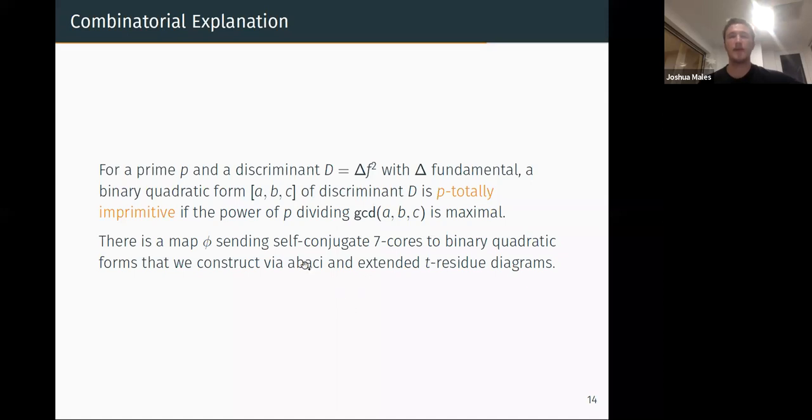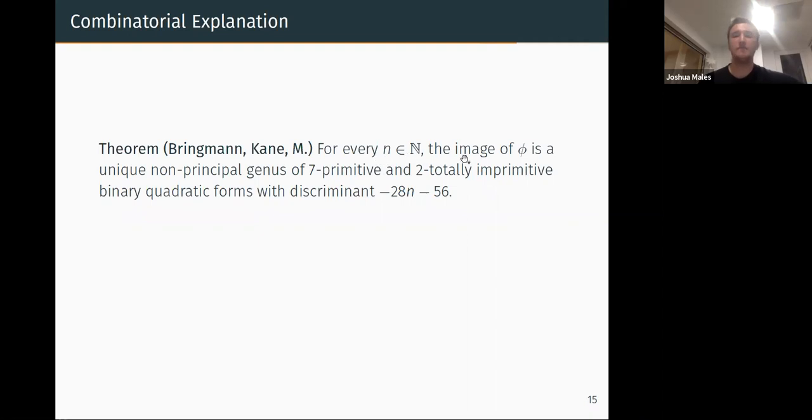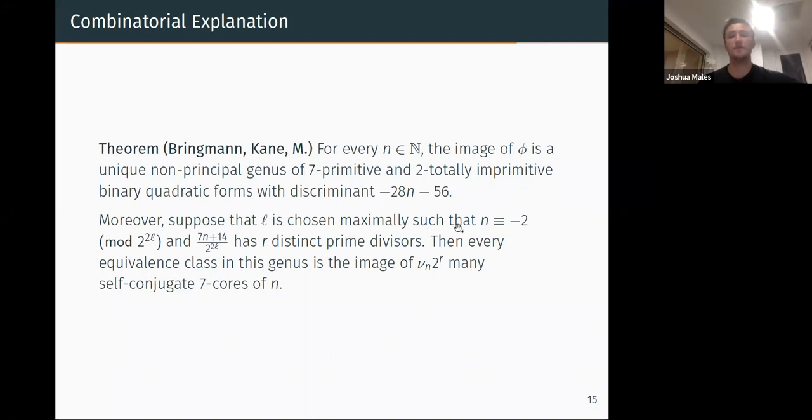So what do we do? We construct some map that takes self-conjugate seven-cores and spits out some binary quadratic form. For any self-conjugate seven-core that you give me, I will give you its corresponding binary quadratic form that lies in some class group. How do we construct these? These are constructed by Abakouy and extended t-residue diagrams—whatever these things are. These are basically more combinatorial ways to represent various partitions. So what's the main point here? For any n, the image of this map spits out a unique non-principal genus of certain binary quadratic forms—in this case the seven-primitive, totally imprimitive. You just think about these as some quadratic forms with a particular discriminant.